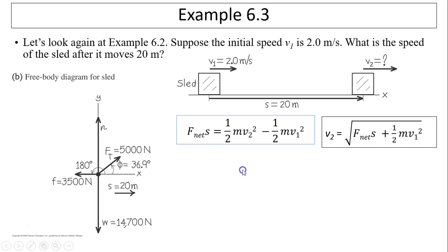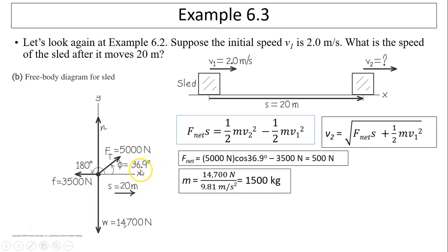So what is F_net in this case? F_net is 5,000 times cosine 36.9 minus 3,500. That's because up and down force cancels.